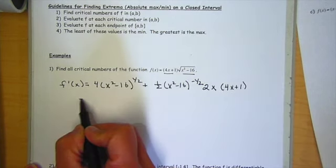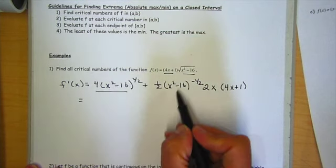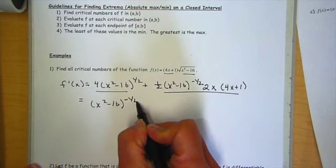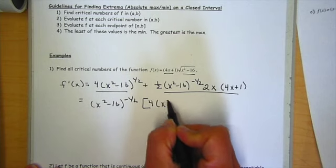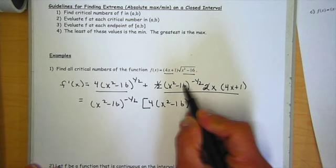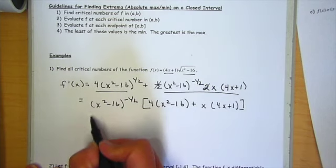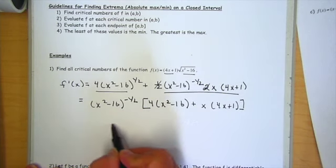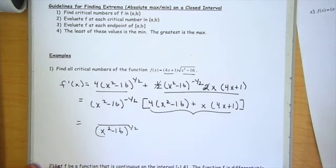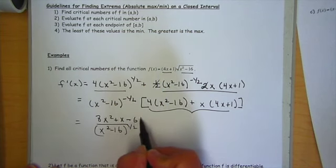Now, before you start multiplying things out, we're going to need to simplify it to find our critical numbers. We want to factor. So the GCF here is going to be x squared minus 16 to the negative one-half. That leaves me with the 4 and x squared minus 16 to the first. This one-half and 2 will become 1, plus this is gone. I have an x and a 4x plus 1. I'm going to drop this to the bottom, so the x squared minus 16 goes to the bottom. I'm going to go ahead and multiply all this out and combine like terms, and it's going to be 8x squared plus x minus 64.